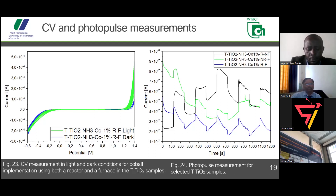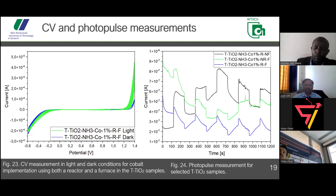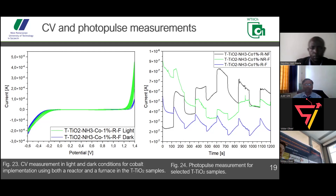In terms of photopulse measurement, the sample was polarized as an electrode, and I periodically switched light on and off to see how it affects the current going through the sample. The best sample is very regular compared to the other samples. The regularity and the ability of the sample to efficiently add and give electrons is positively correlated with how well it performs as a photocatalyst.